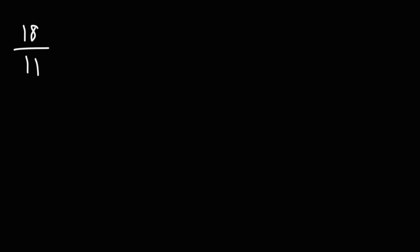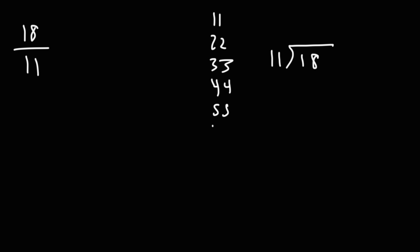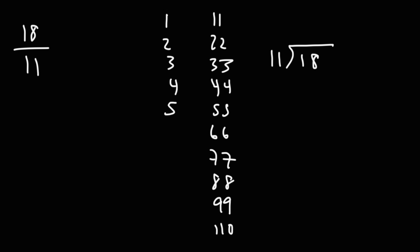For the sake of practice, let's work on one more example: 18 over 11. This is an improper fraction. We have 11 on the outside, 18 on the inside — we're dividing 18 by 11. Let's write the multiples of 11: 11, 22, 33, 44, 55, and we're going to go up to 10. 11 times 10 is 110. Now 11 goes into 18 one time. 11 times 1 is 11. 18 minus 11 is 7.